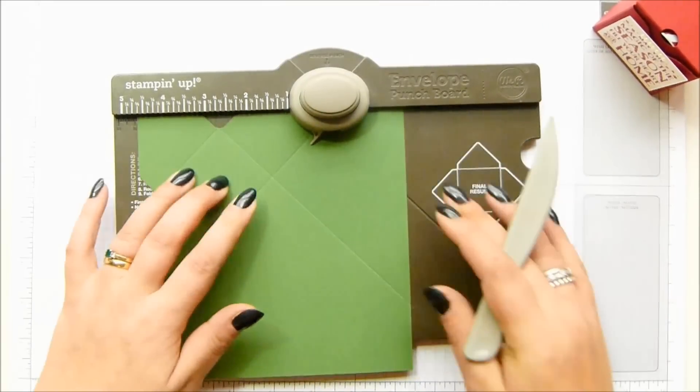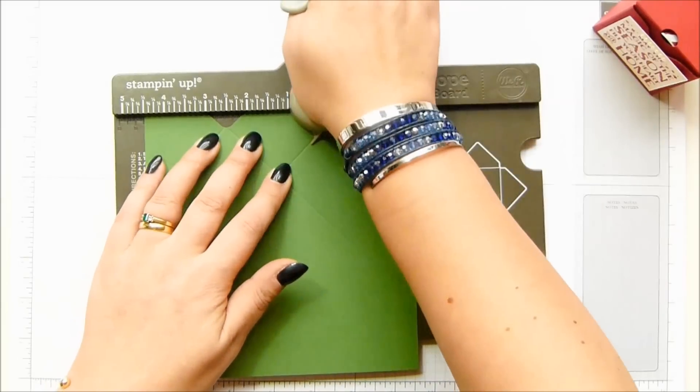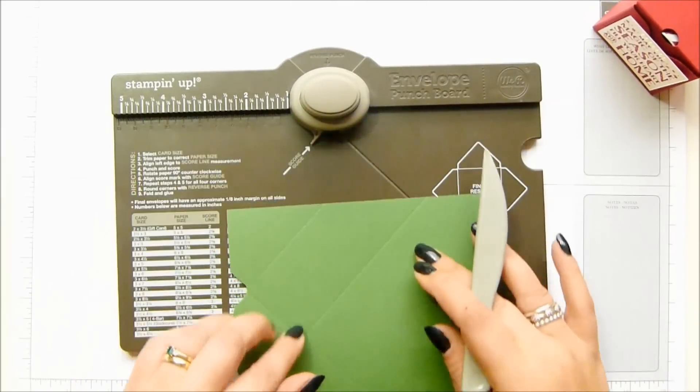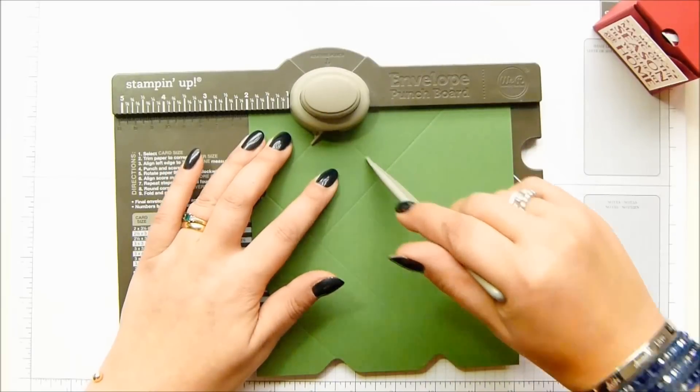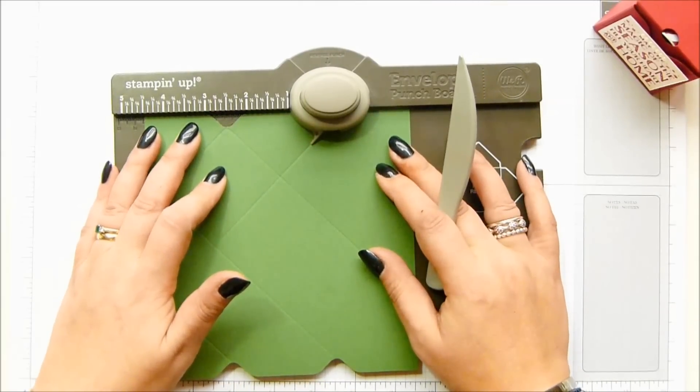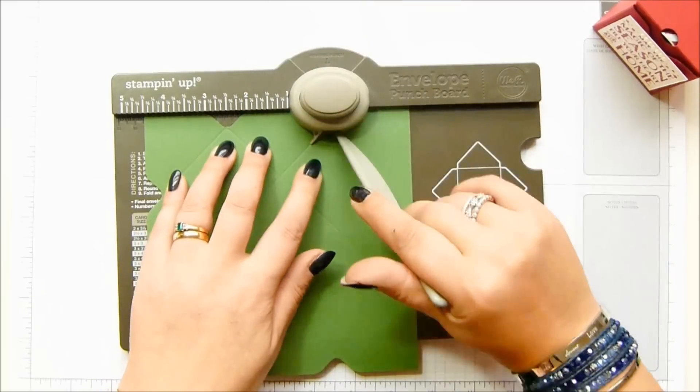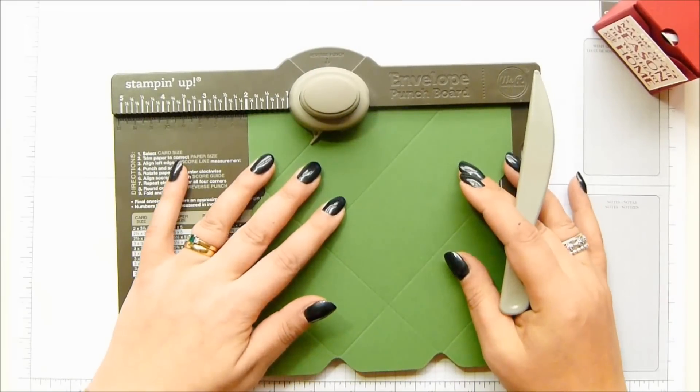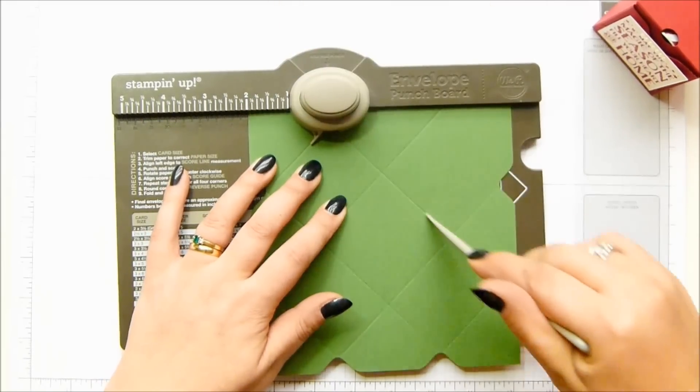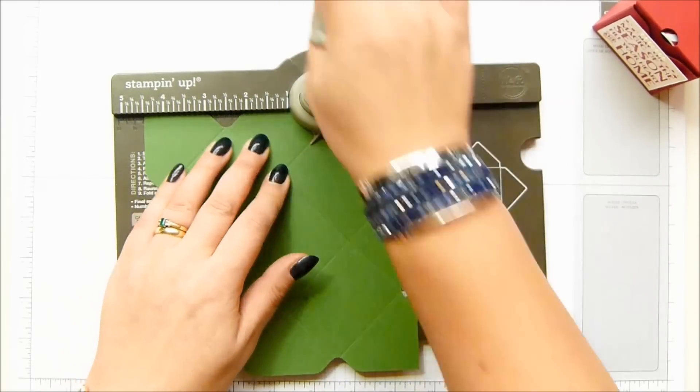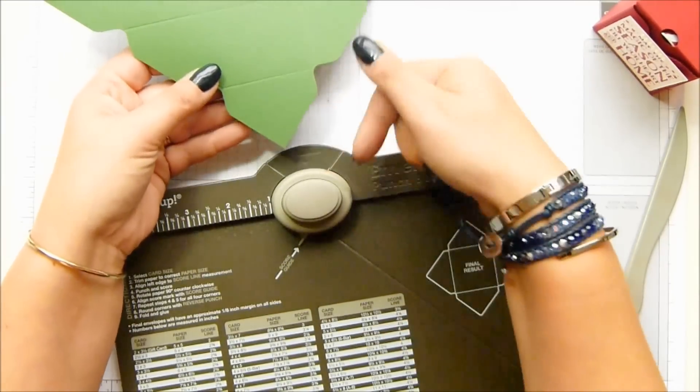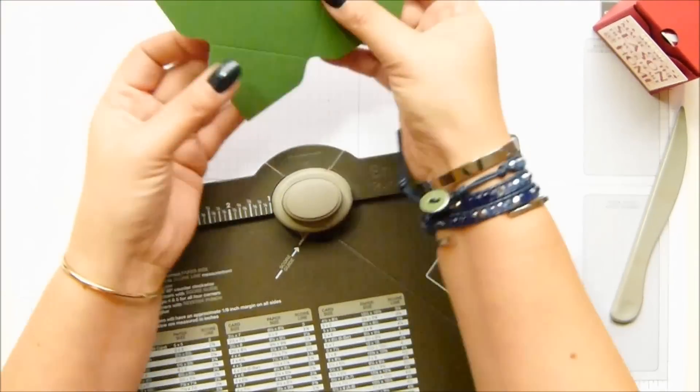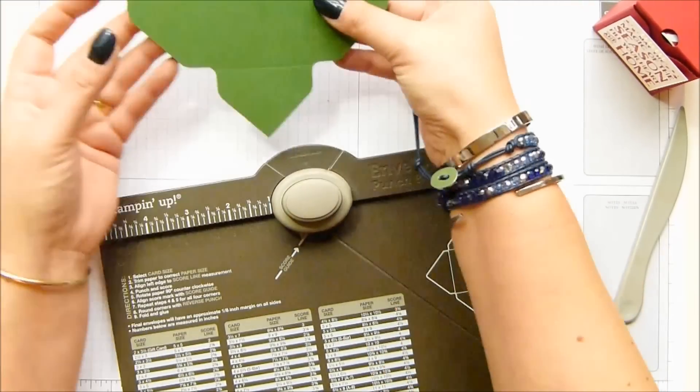And then you just keep doing the two and the four and a half all the way round. Just keep going two, four and a half, two, four and a half all the way round the box. Okay and then before I get rid of this I'm going to round off the corners so that's putting your corners into the opposite side of the punch.